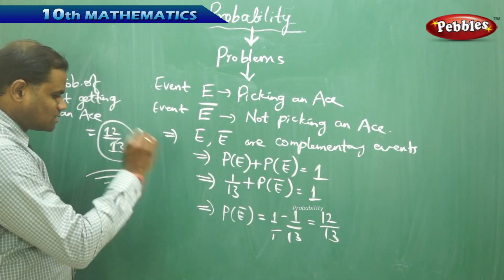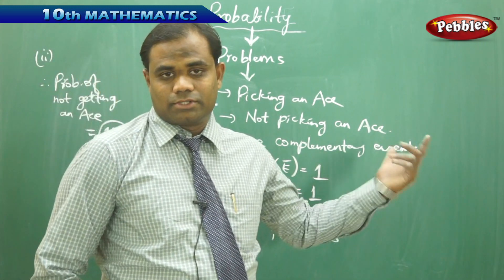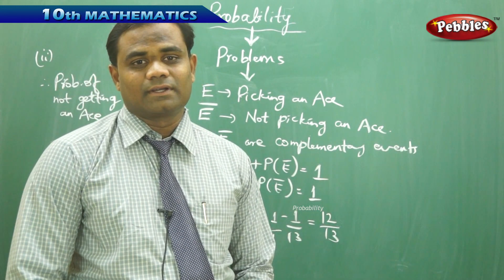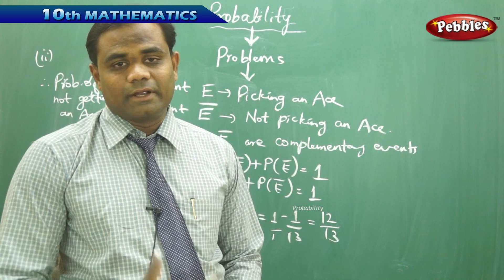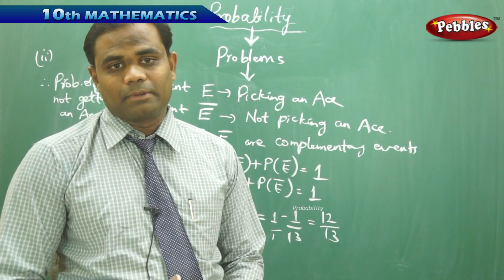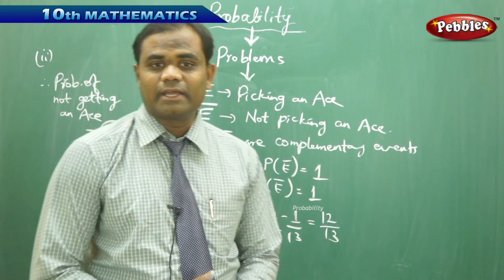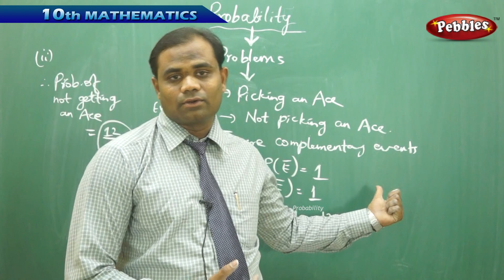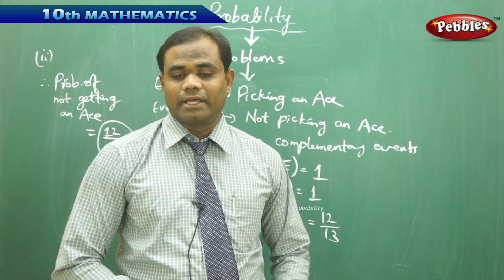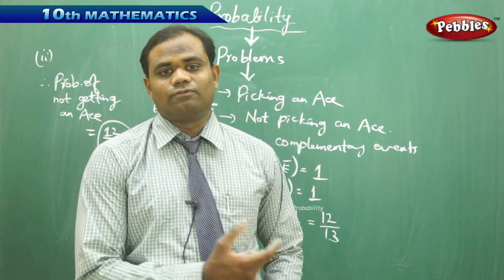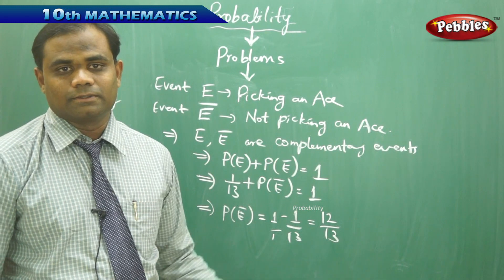This is how we solve situational problems of daily life connected with probability, finding the chance of happening and not happening — in this case, the chance of getting an ace and not getting an ace — through the complementary events formula as discussed in the topic of probability.